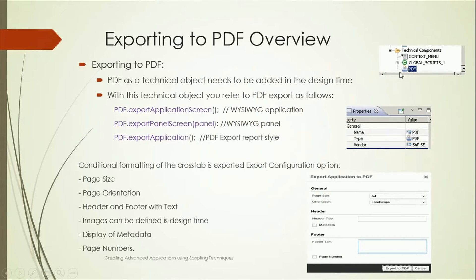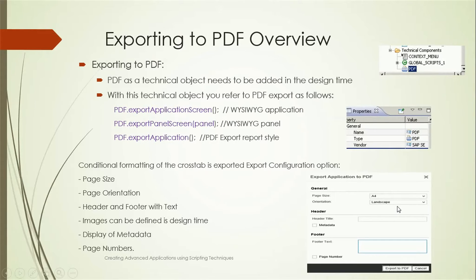To export to PDF, in Technical Components under Script Objects there is a PDF option. You can create a PDF script and use functions like pdf.exportApplicationScreen, pdf.exportPanelScreen, and pdf.exportApplicationPDF. Once this script is in place, at runtime users see an 'Export to PDF' icon, where they can choose page size (e.g., A4), orientation (landscape or portrait), and optional footer text before clicking Export.